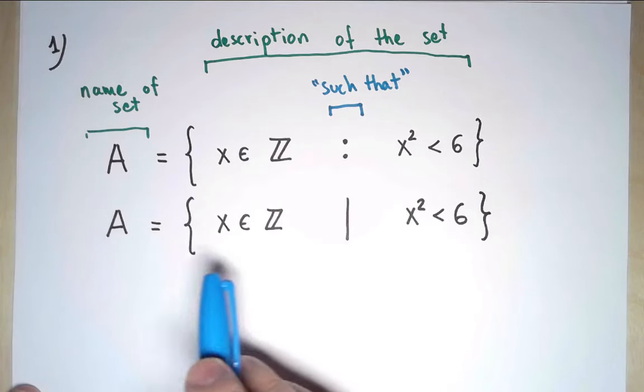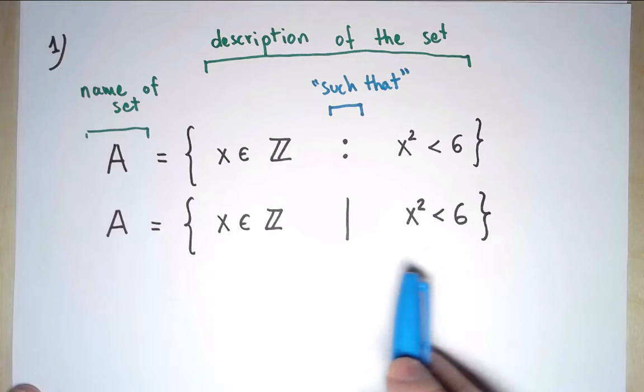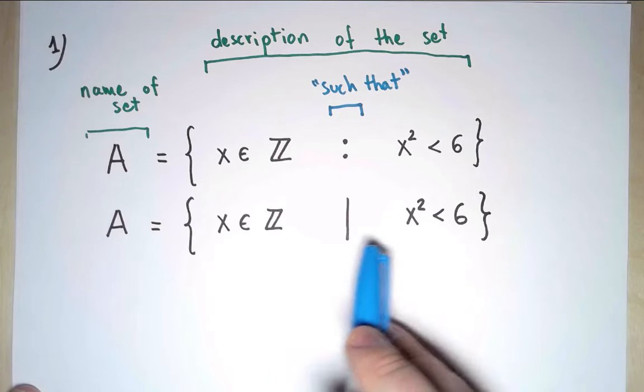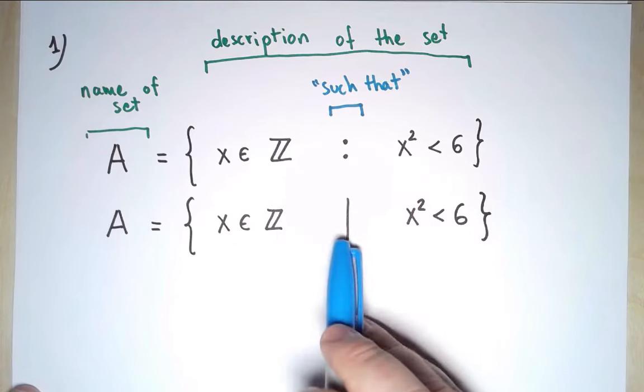We need this symbol because when we describe a set this way, the description is always split into two pieces, and 'such that' does that splitting.